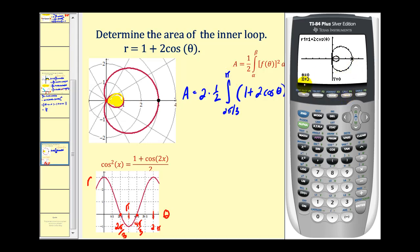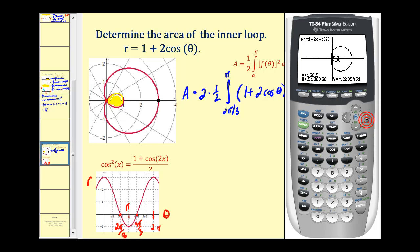If we press trace, this verifies that r is equal to three when theta is zero. Let's go ahead and press the right arrow. We can verify that at 120 degrees it's at the pole, and then it increases to 180 degrees. Notice we're tracing out the lower half of the inner loop. So at 180 degrees, we should be halfway through the inner loop, which we are. So this does verify our limits of integration.